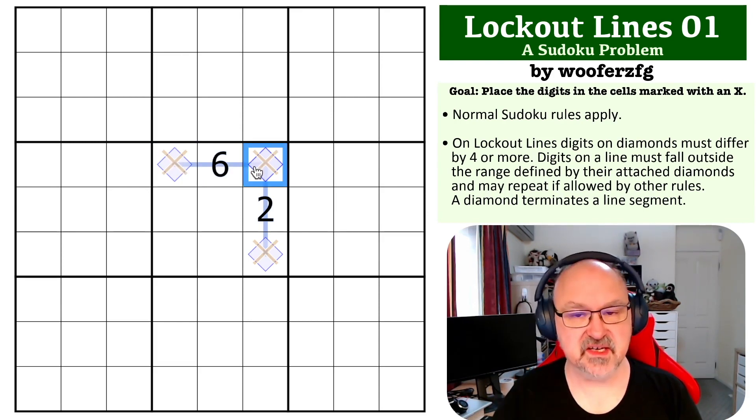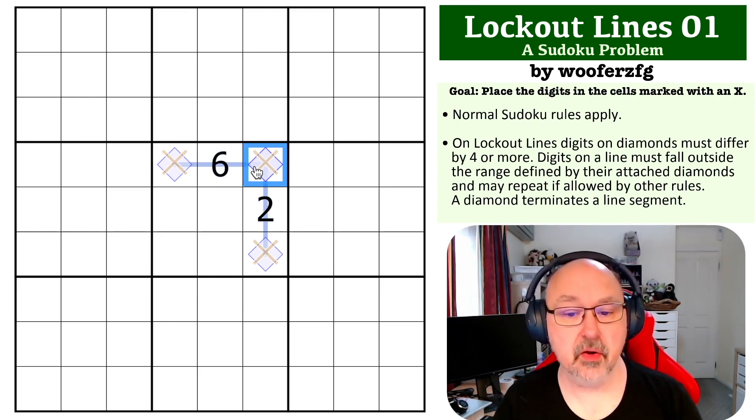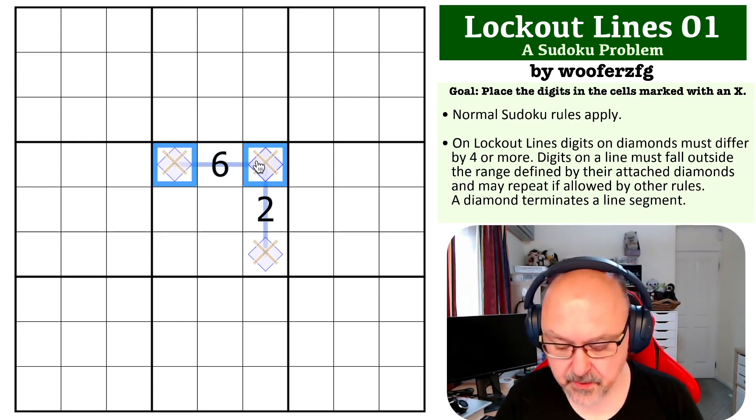So the only digits that can have a six on it, and if you make your own lockout line table, which I do highly recommend, the only digits that can have a six on a lockout line are one and five. So these become one and five.